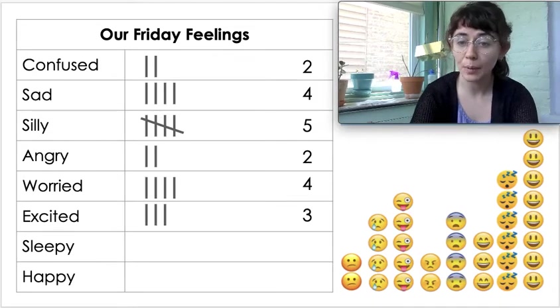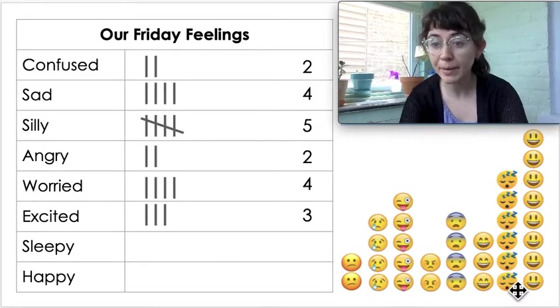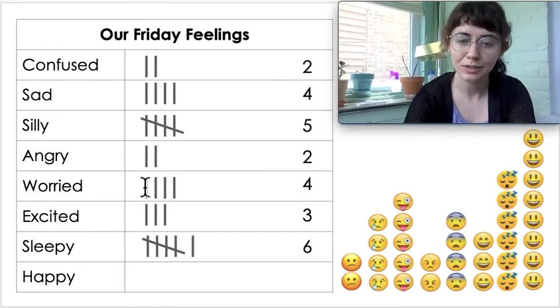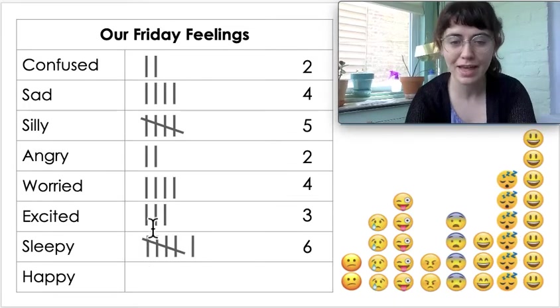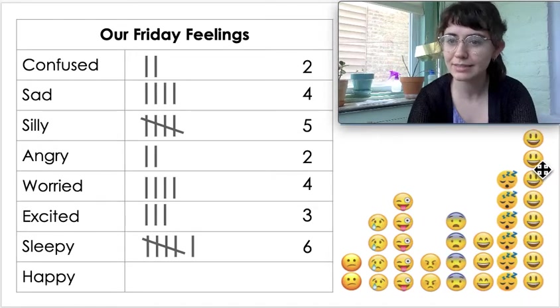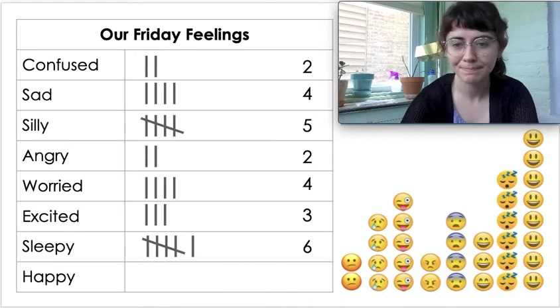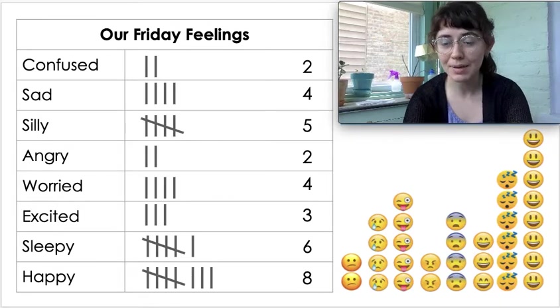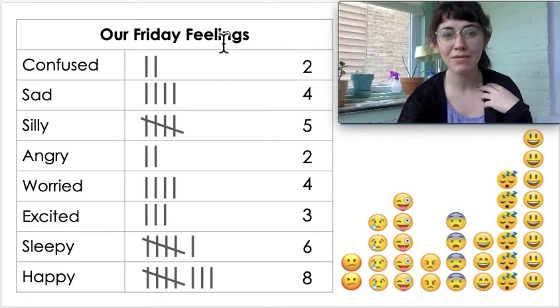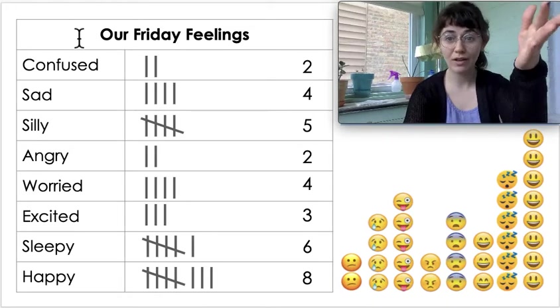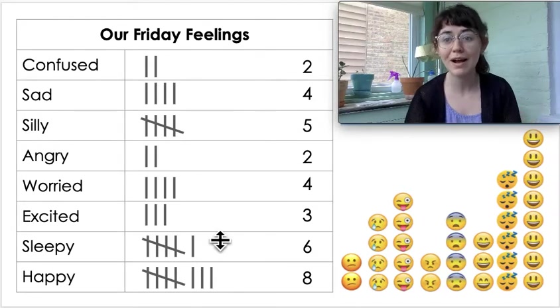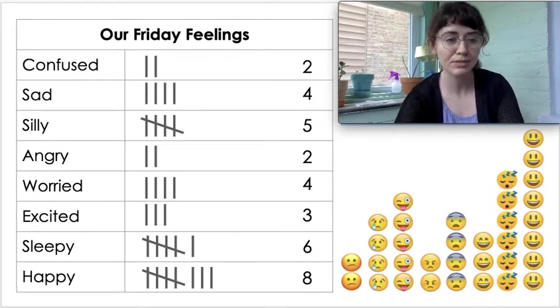Then excited is three. Sleepy is six, so there's that group of five again, and then six. And then happy is eight. So my table is all done. Again, you notice I have the title. I have all of my categories. But what's different here is that instead of pictures in my picture graph, I'm just using tallies and numbers for a table.